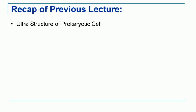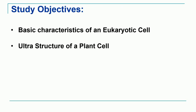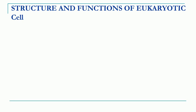Let's take a brief recap. In the last lecture we have studied the ultrastructure of a prokaryotic cell. We have studied what are the different parts or structures which are present in a typical prokaryotic cell. The study objectives for today's lecture are: we will understand the basic characteristics of an eukaryotic cell and then we will study the ultrastructure of a plant cell.